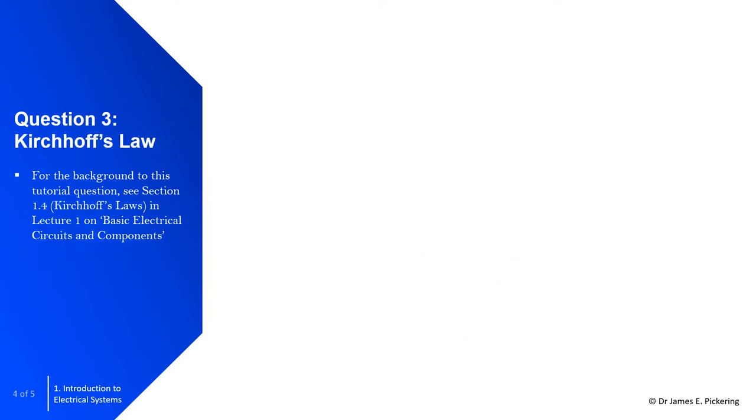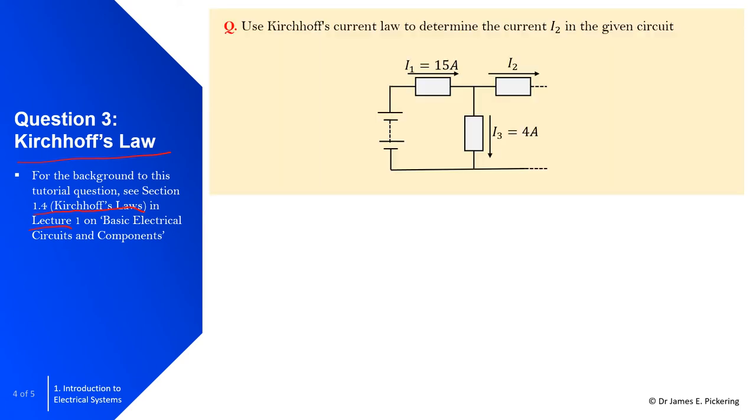This next question is on Kirchhoff's law. For any background into Kirchhoff's law, see section 1.4 from lecture 1 on basic electrical circuits and components. In this question, we're going to use Kirchhoff's current law to determine the current denoted I subscript 2. You can see that given here. We have two other resistors: I subscript 1 is 15 amps, and I subscript 3 is 4 amps.